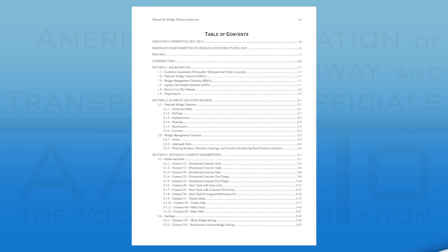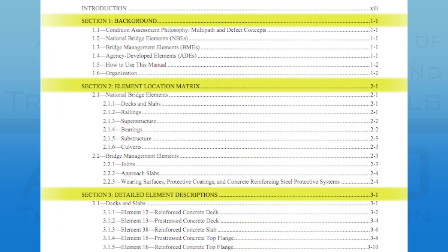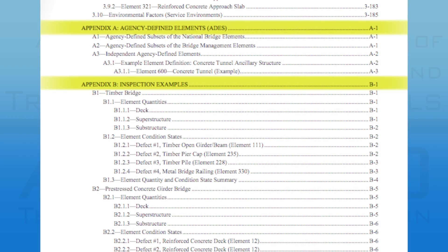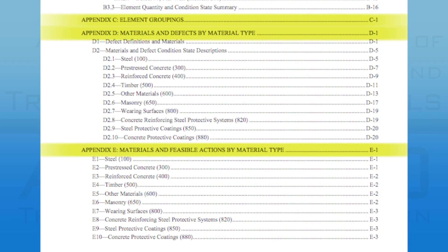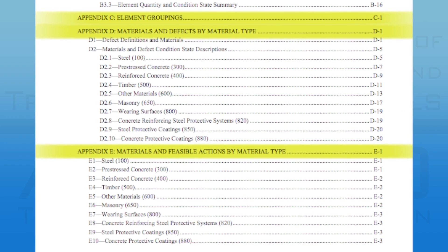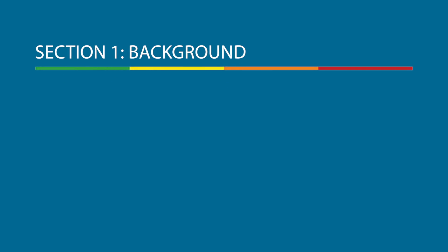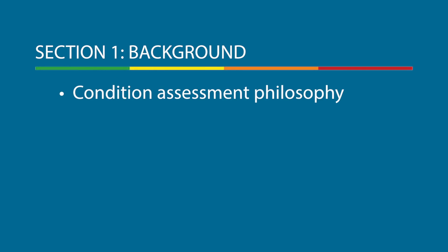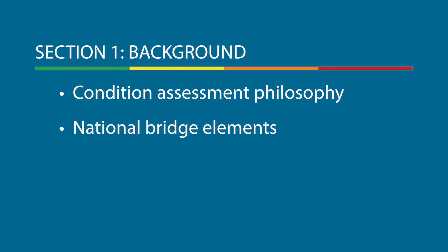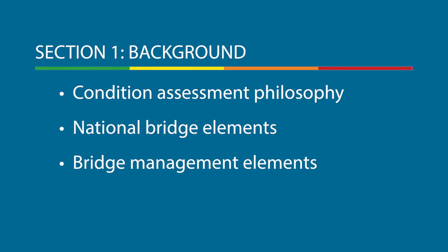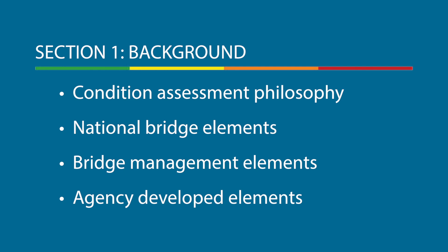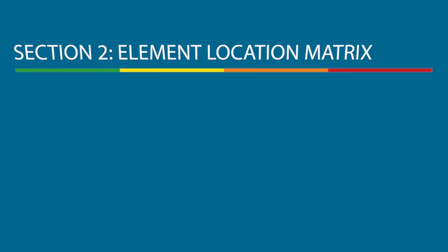The new manual includes three sections and five appendices. In addition to information on the layout and use of the manual, Section 1 Background describes the Condition Assessment philosophy, National Bridge Elements, Bridge Management Elements, and Agency Developed Elements.